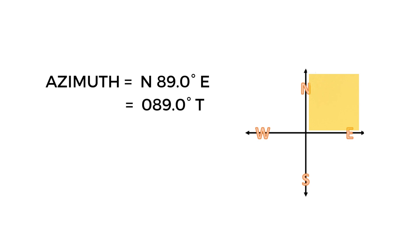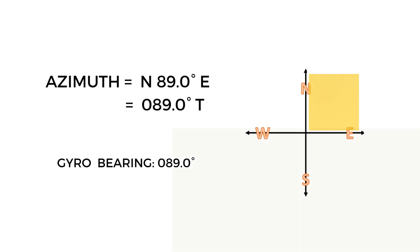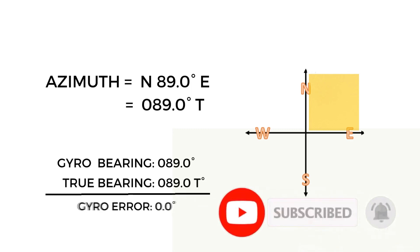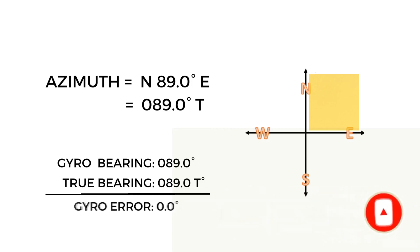Compare that with our gyro compass bearing we took earlier, which is 89.0 degrees. Our gyro error should be 0 degrees. Thank you for watching — please like and subscribe.